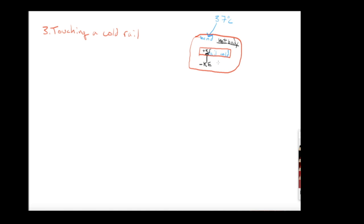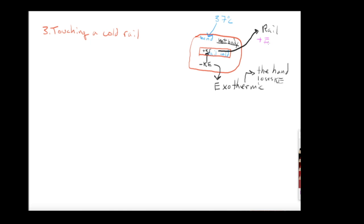Relative to the hand, this process is exothermic — the hand loses kinetic energy. Relative to the handrail, the process is endothermic — the rail gains energy and warms up, while your hand cools down.